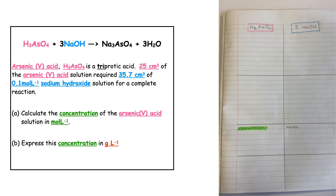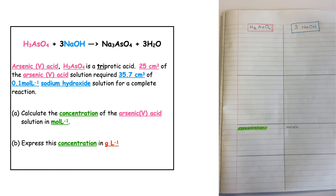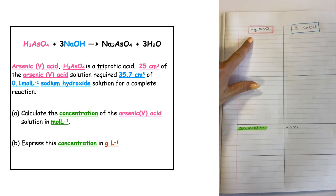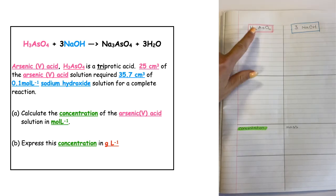In this next equation we've got arsenic acid with the formula H₃AsO₄, which is a triprotic acid — meaning it has three hydrogens in the formula. 25 centimeters cubed of this acid solution required 35.7 centimeters cubed of 0.1 mole per liter sodium hydroxide solution for a complete reaction. Part A wants us to calculate the concentration of the arsenic acid in moles per liter.